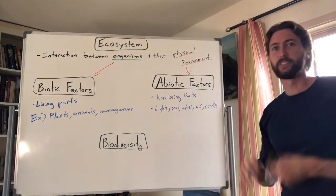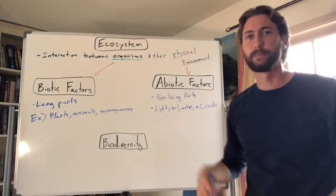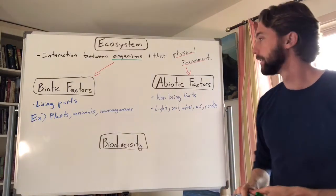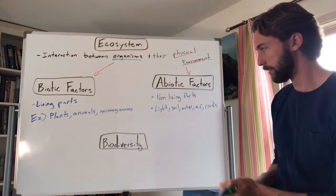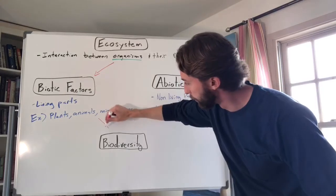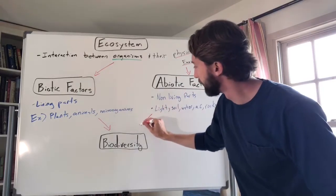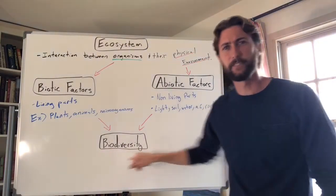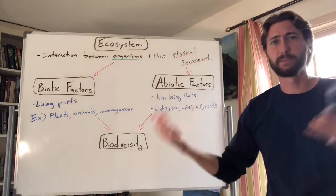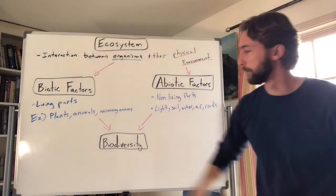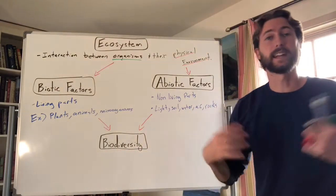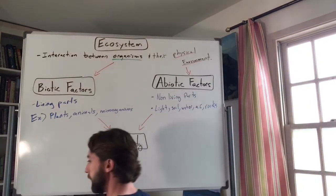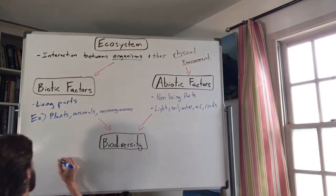The way that biotic and abiotic factors interact determines something called biodiversity. Let's break down the word: 'bio' means life, and 'diversity' means variety or differences. So biodiversity means different types of life — the variety of living things in an ecosystem.